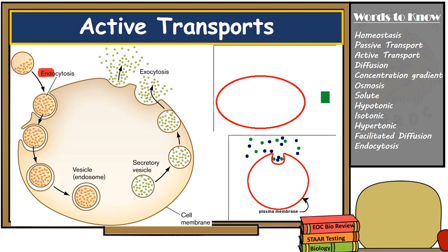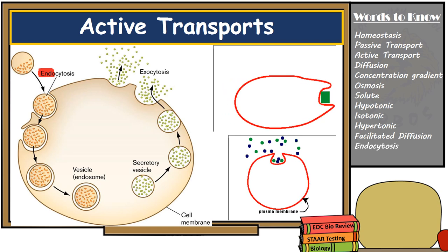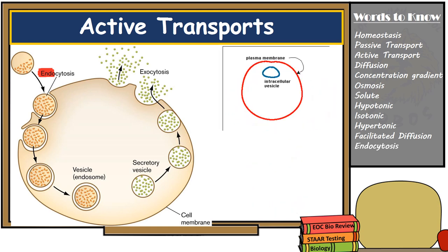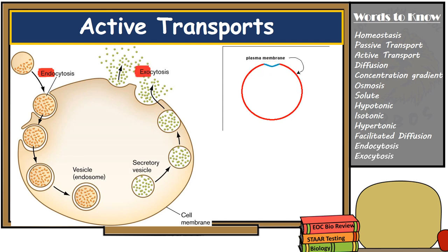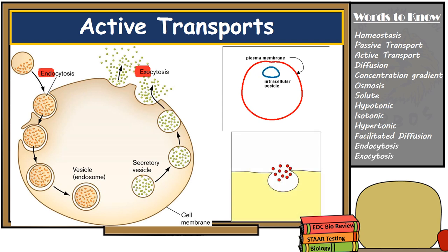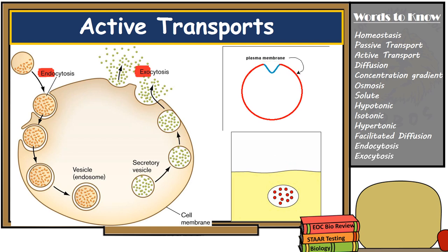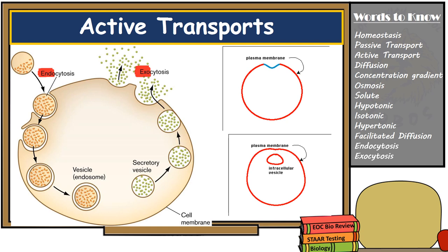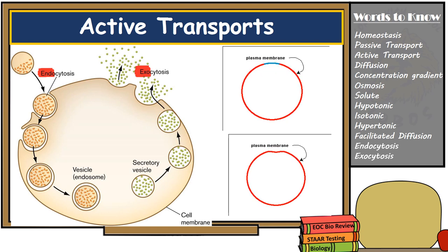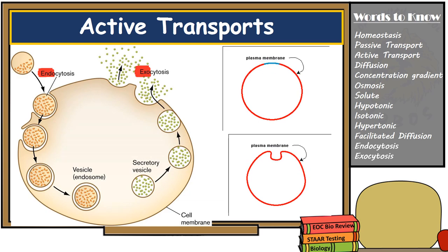When a substance is being removed from the cell — exiting the cell — we call this process exocytosis. 'Exo' sounds like 'exiting.' During exocytosis, the membrane of a transport vesicle fuses with the cell membrane, causing unwanted materials to be removed from the cell. Both endocytosis and exocytosis are types of transport which require energy; therefore, these are also forms of active transport.